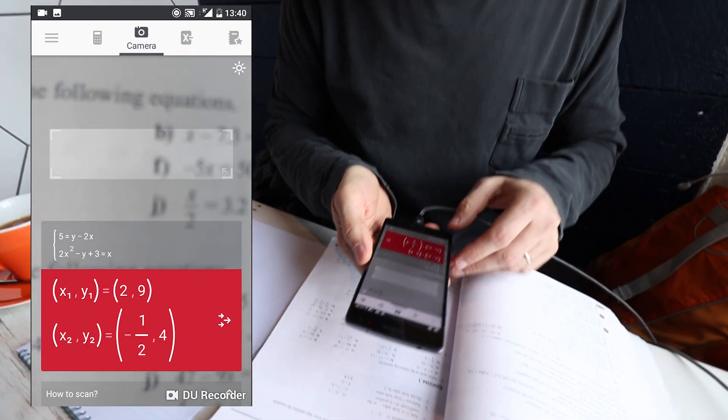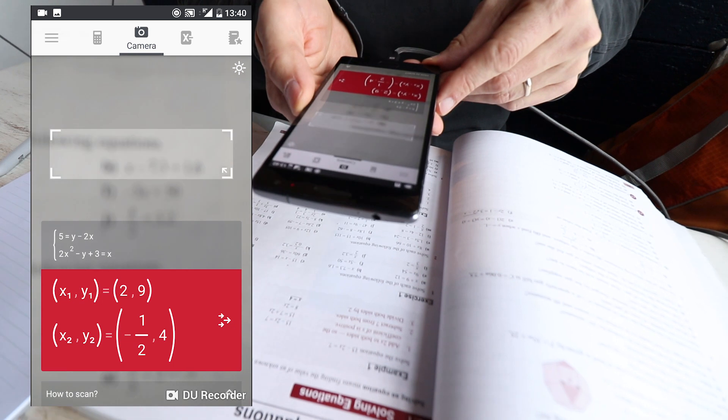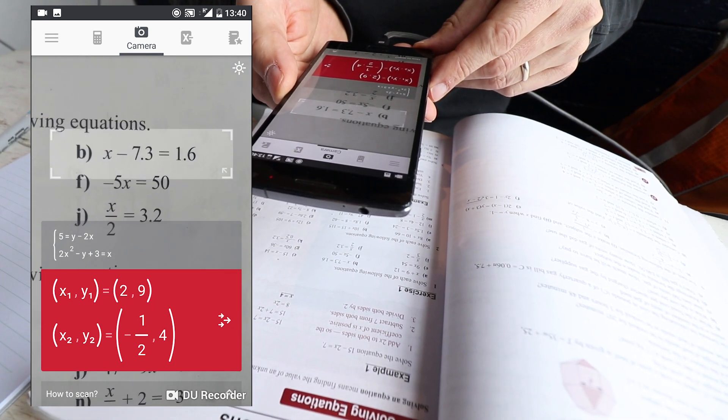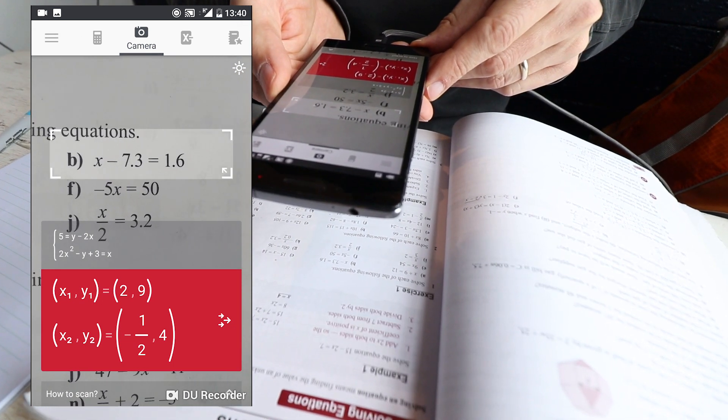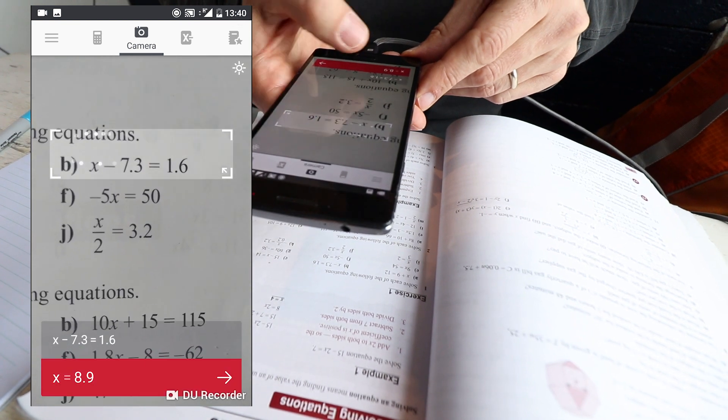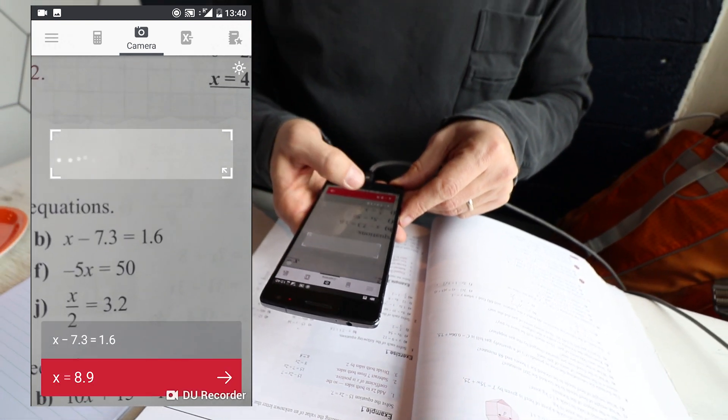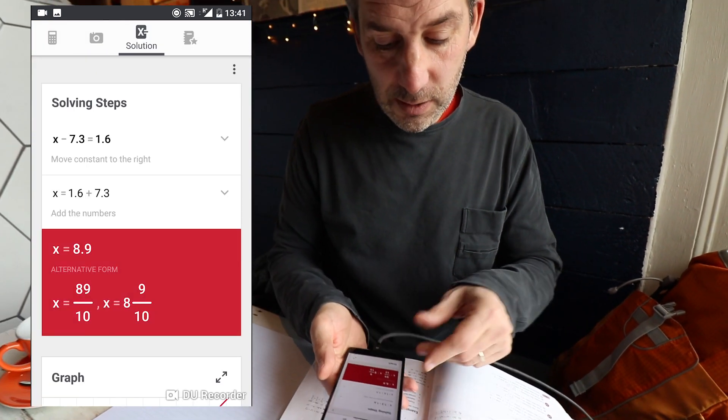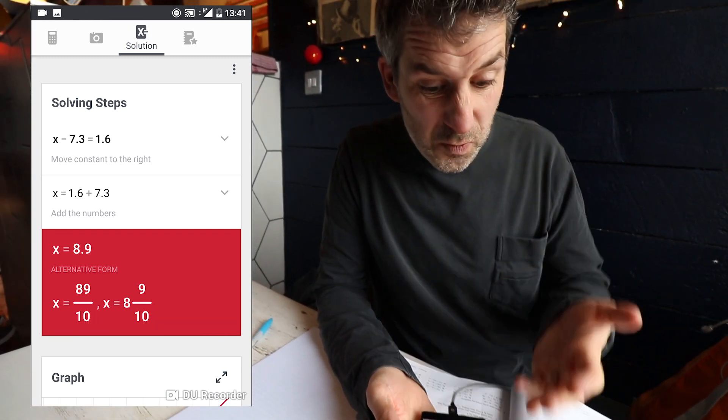So you then just point your phone at an equation like this, and it takes a moment to get it in focus. Then it'll beep. There you go. And it gives you the solution. You can click on that. You can click on the solution, and it will take you through the steps to solve that equation.